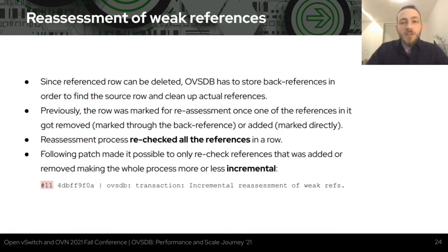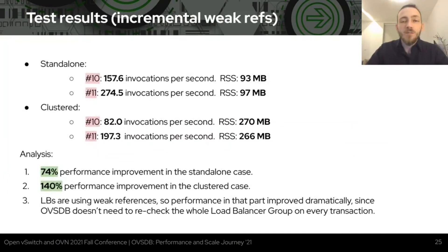Continuing to make the OVSDB server more incremental, we need to optimize reassessment of weak references. The implementation of weak references has the same problem of rechecking the whole set instead of only what changed, but it's also more complicated. Reworking the way back references are stored allowed us to make the process more incremental in patch number 11. The performance improvement is about 74% in standalone and 140% in the cluster, going from 82 to 197 OVSDB client invocations per second.